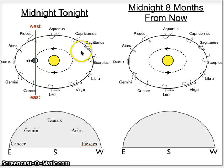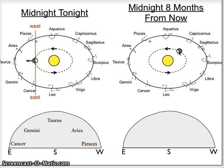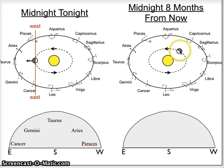Here's midnight tonight. Where will our observer be for midnight eight months from now? There are 12 constellations and 12 months in a year. The Earth was lined up between the sun and Taurus. One month later it lines up with Gemini, two months with Cancer, and so on — three, four, five, six, seven months. Eight months later, it will lie on the line connecting our sun and Capricornus. Here is our Earth eight months later.